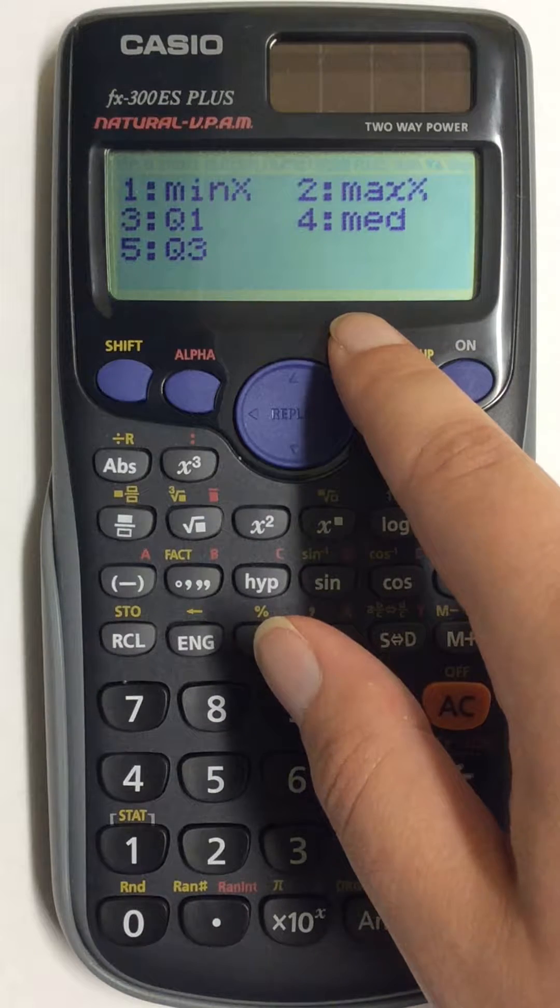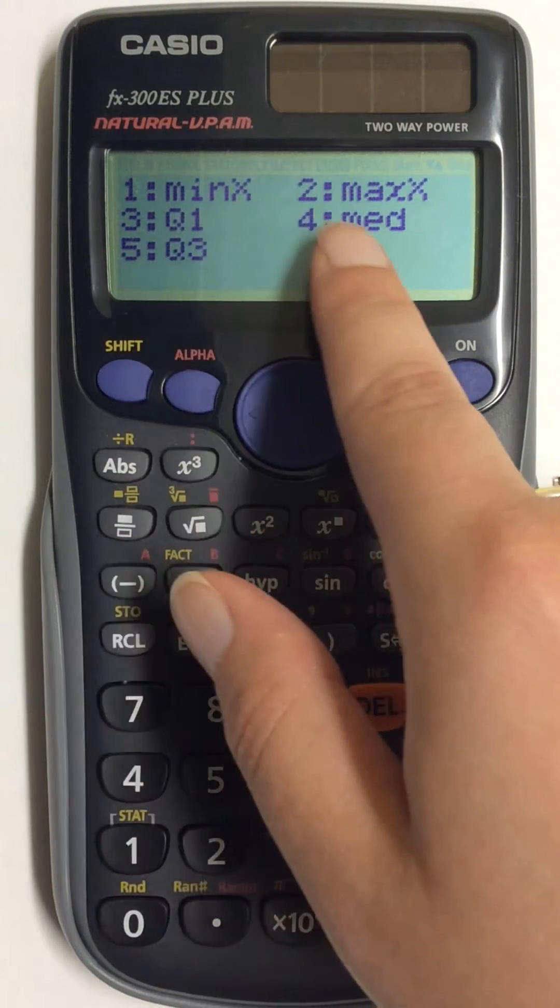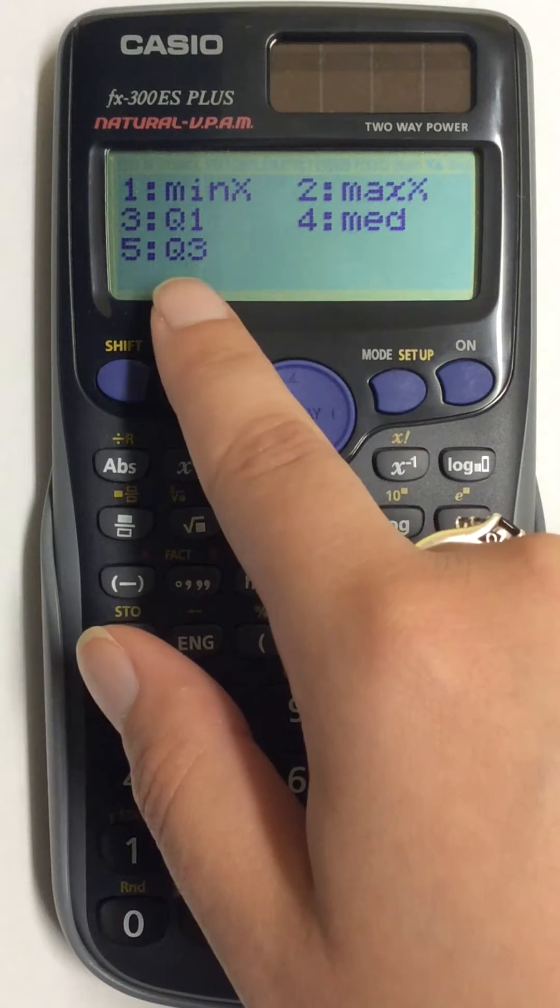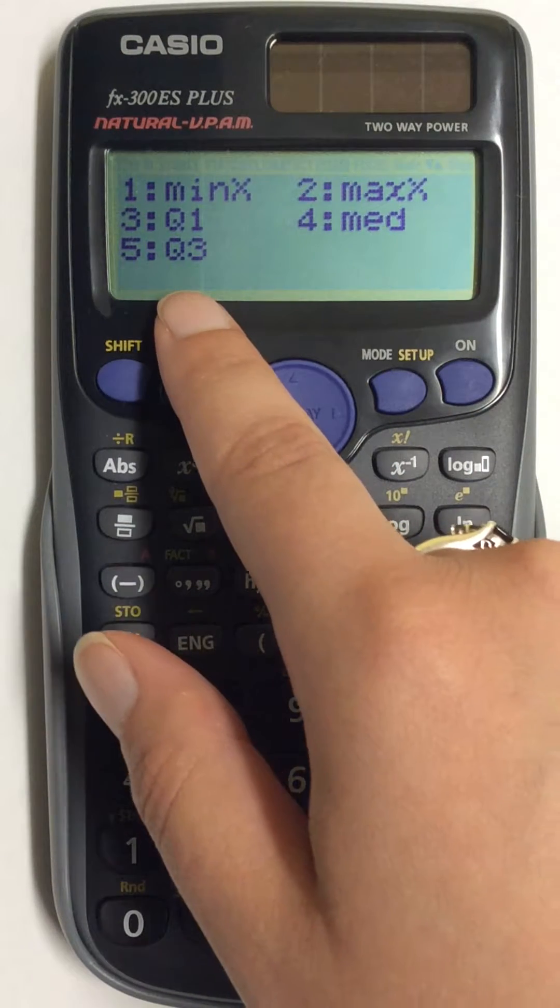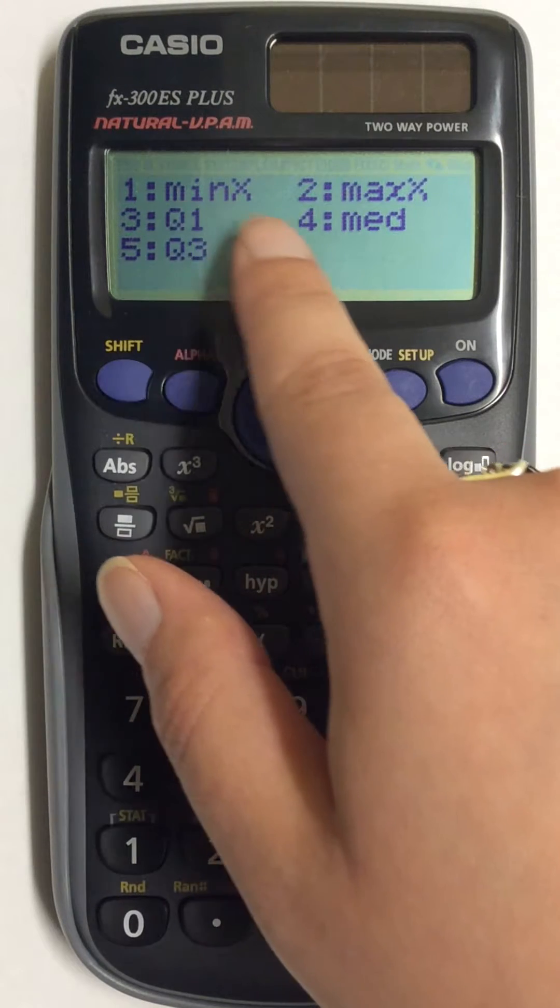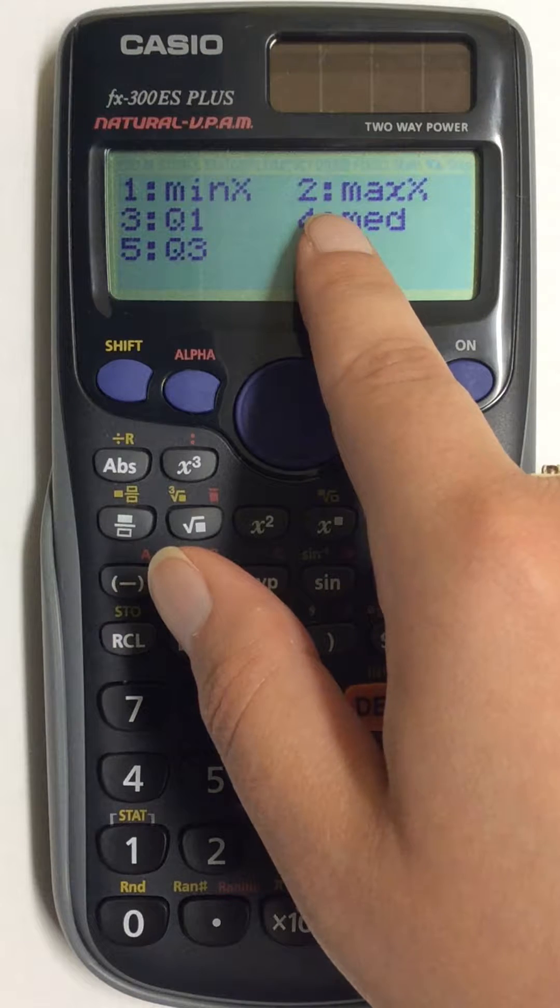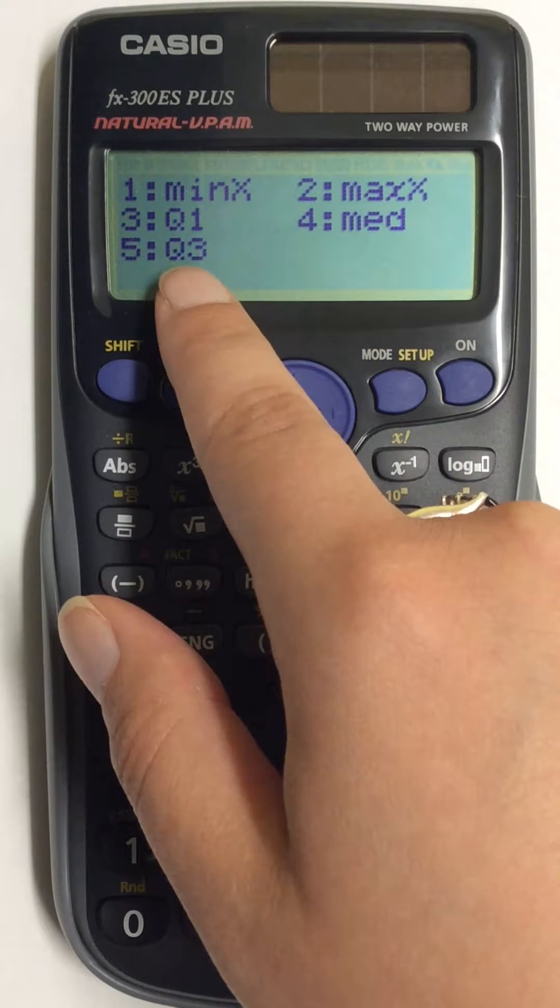In order to find these, you will need to find them individually, so you'll need to select them each on their own. So your Minimum and Maximum are options 1 and 2. Your 1st and 3rd quartiles are options 3 and 5.